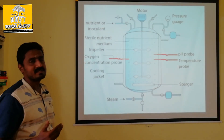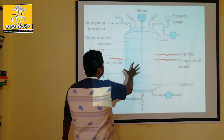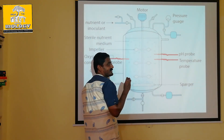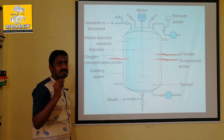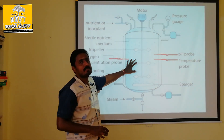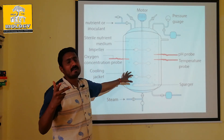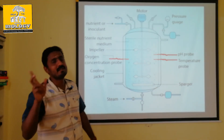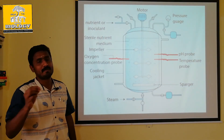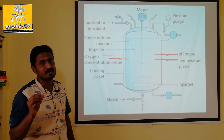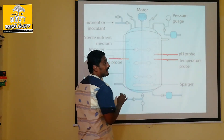Here we can assemble the downstream process: filtration, distillation, centrifuging. The first medium plus the substance is harvested. The product is produced by bacteria through fermentation. The sparger is a stream. Temperature probe, pH probe — if you have a pH probe, we can measure it.